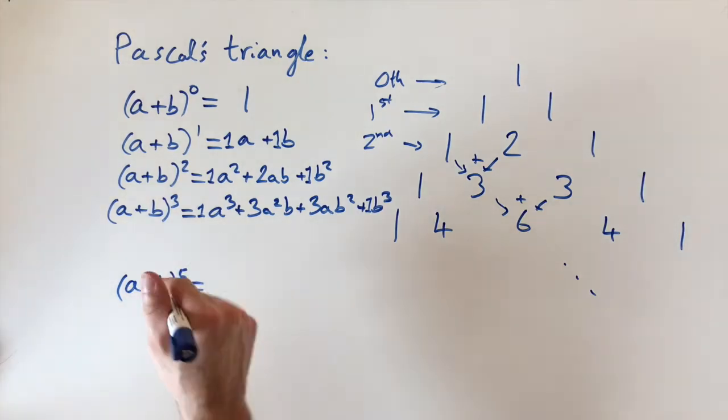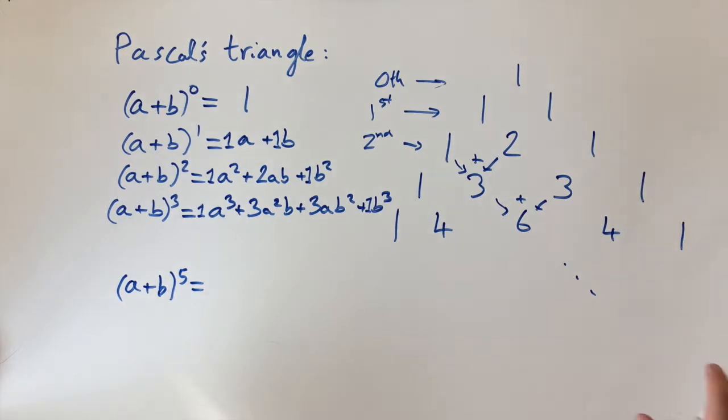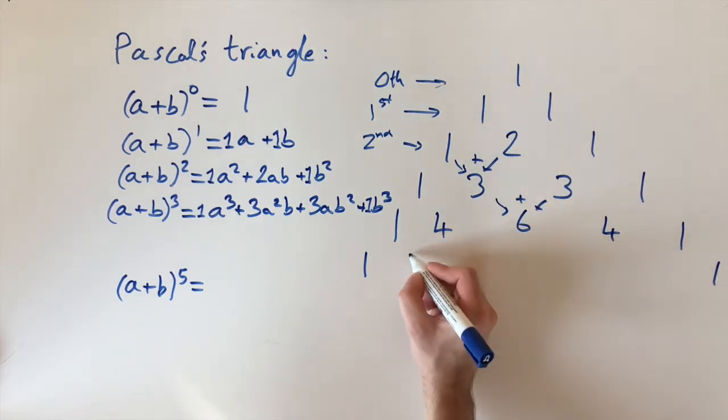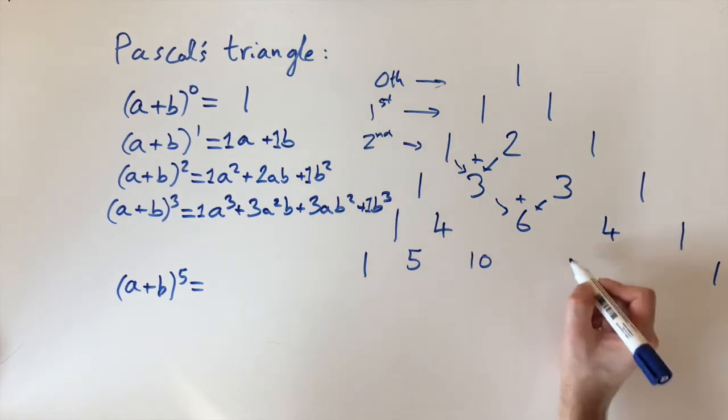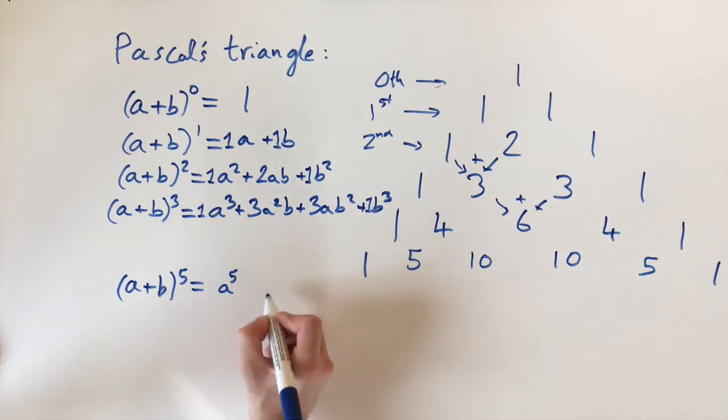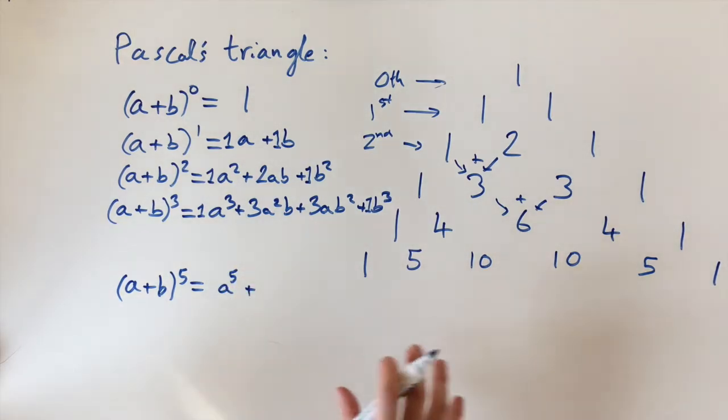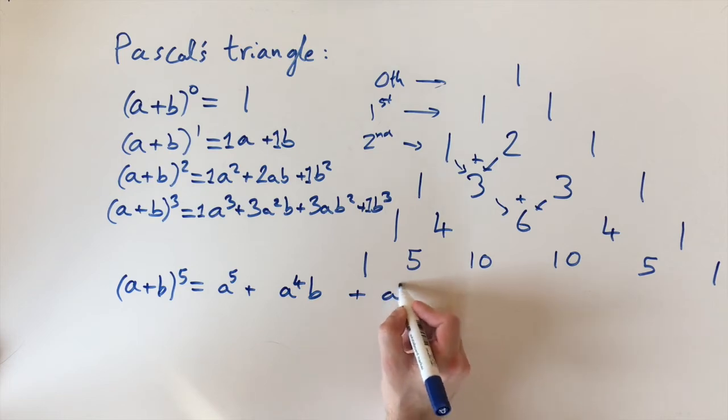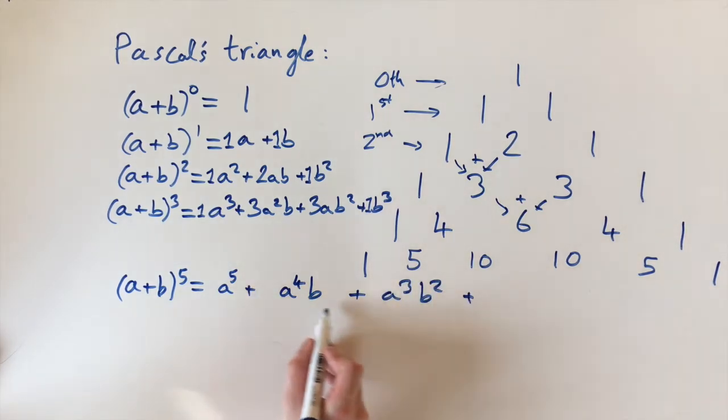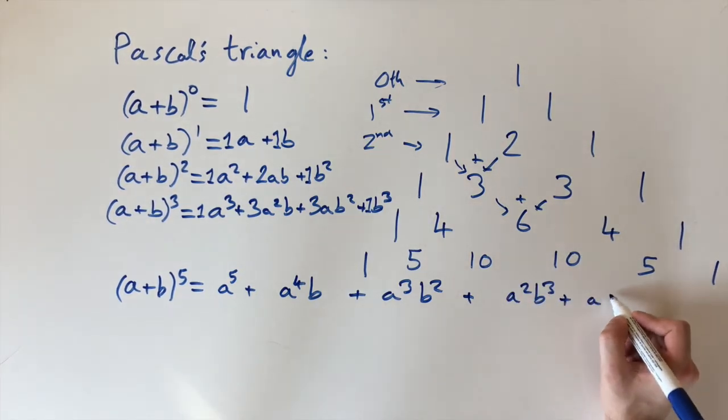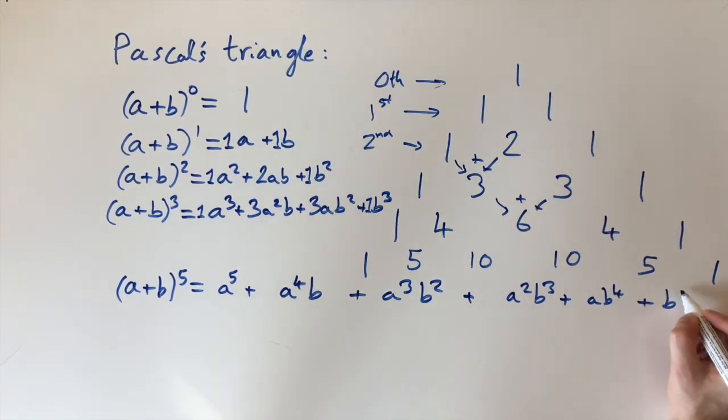We could do this by hand, it would take a long time, or we could just work out the fifth row of Pascal's triangle. So let's do that. Remember we put ones on the edges, and then to get the middle terms we take the two numbers above it and add them together. So this is 5, this one is 10, this one is 10, and this one's 5. This tells us the coefficients. We have a to power 5. If I write it without the coefficients first, the pattern here is a⁴b + a³b² (the powers of a going down by one, powers of b going up by one), so a²b³ + ab⁴ + b⁵.